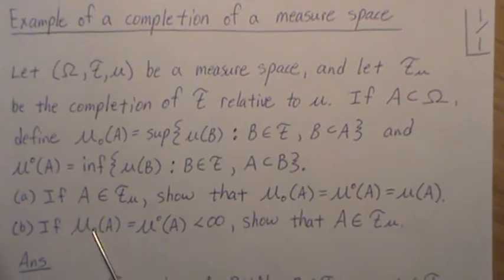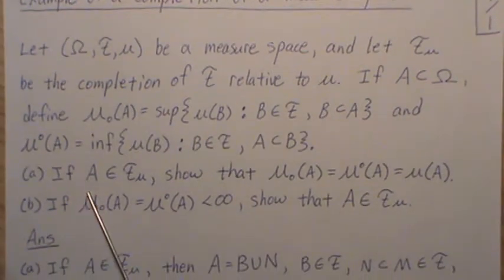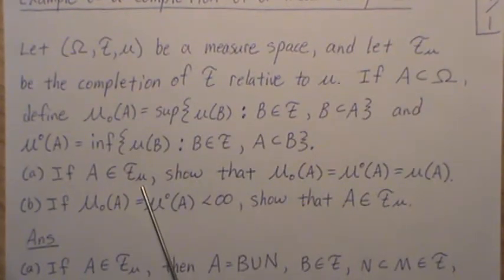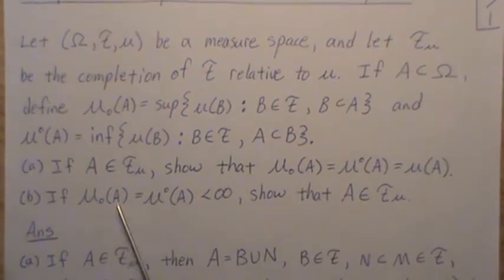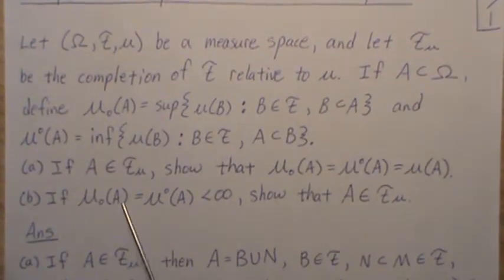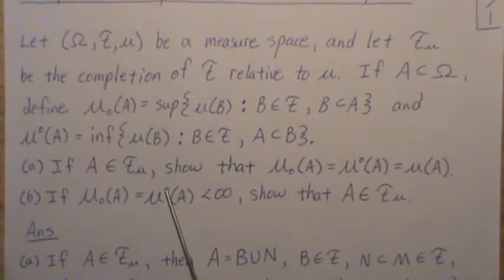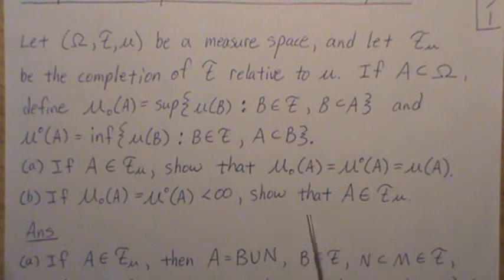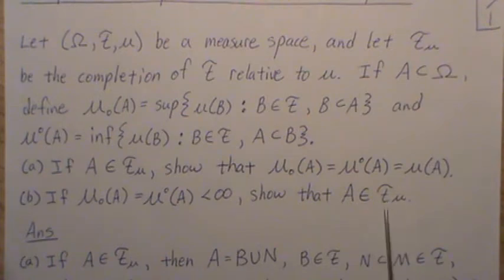Now we're going to prove these two statements. If A is an element of f of mu, show that these three measures equal. If mu sub zero of A is equal to mu superscript zero of A, if they're equal and finite, then A must be in the completion of f relative to mu, f of mu.